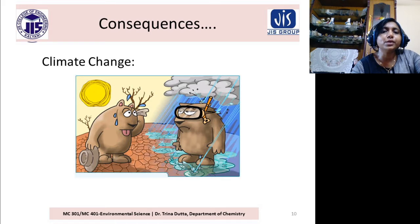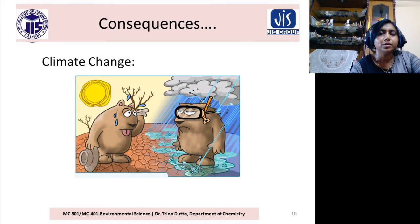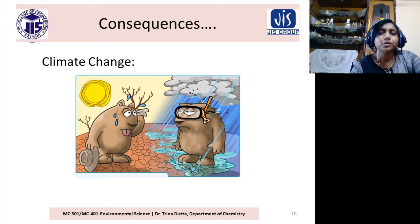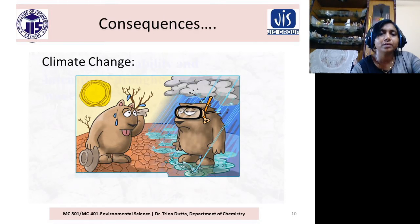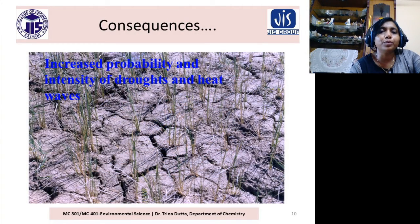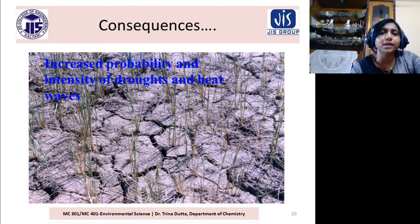A consequence of global warming is climate change — our climate is changing and is now unpredictable. There are different extreme climate events like cyclones and hurricanes. It is very difficult to take measures against all these situations. The probability of drought and heat waves is increasing.